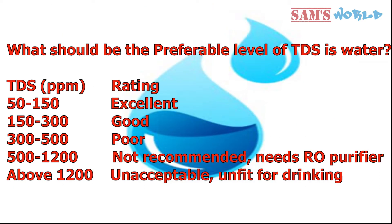What should be the preferable level of TDS in water? Though we need minerals in our body, there is a limit to everything. The WHO came up with the following conclusions: a TDS level between 50 to 150 ppm is considered excellent for drinking; between 150 to 300 ppm is good; between 300 to 500 ppm is poor; between 500 to 1200 ppm is not recommended at all — you should get an RO water purifier. Above 1200 ppm is unacceptable and not fit for drinking at all.